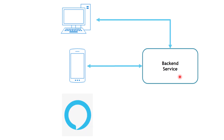Then you decided you want to grow your solution and reach more customers through different frontends, like Alexa for example. You decided to build a dedicated Alexa skill for your solution and connect it with the backend service. For those who don't know what Alexa is, it is a device developed by Amazon, similar to Google Home developed by Google.